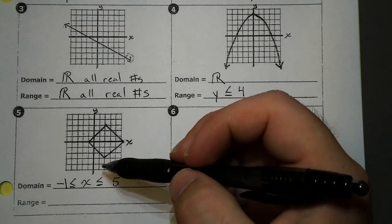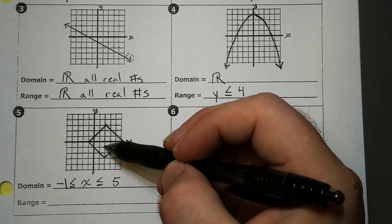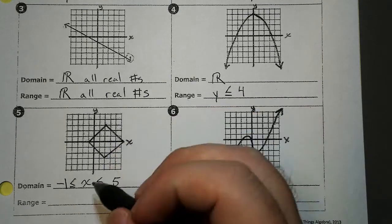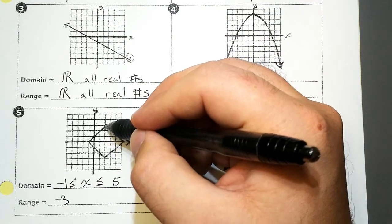Now for the range, start at the bottom, go to the top. At the bottom, boom, it stops at negative one, two, three. At the top, it goes to positive one, two, three.